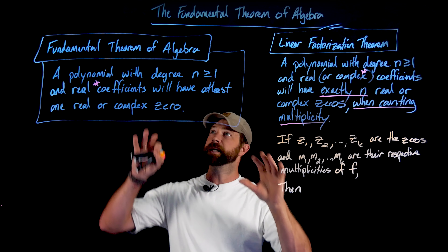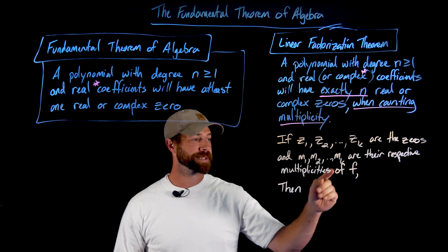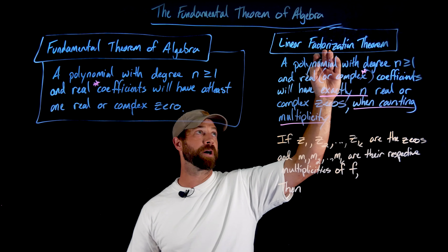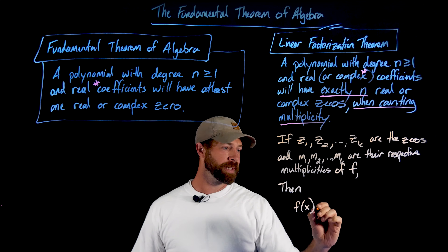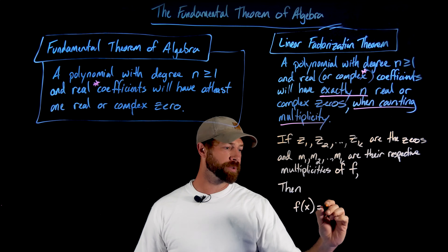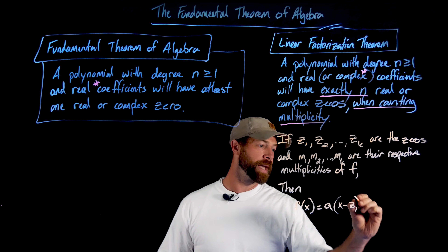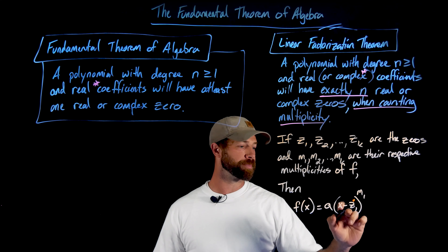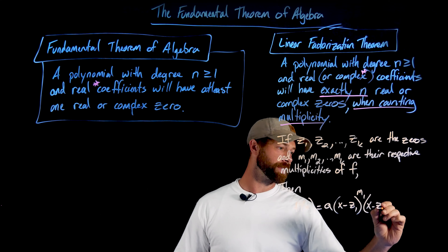When we marry that to the factor theorem, we know that if we have a zero, then the factor x minus c is a factor, meaning we can divide it out evenly and be left with that factor times another polynomial. Well, this statement holds for that new polynomial — whatever you got left after you pulled out that factor must have a zero as long as its degree is one or greater. So the linear factorization theorem is just building off of this and the factor theorem.